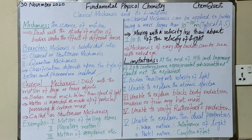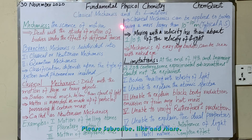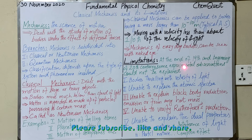So what are the limitations of classical mechanics? At the end of the 19th century and the beginning of the 20th century, some experimental observations were made by different scientists that could not be explained by classical mechanics at all.